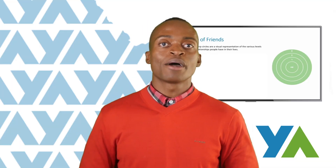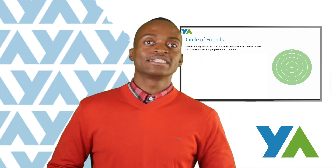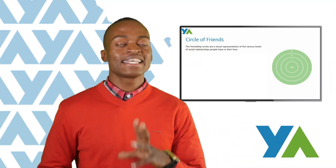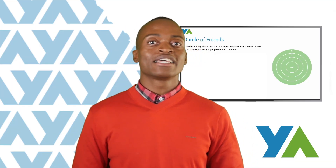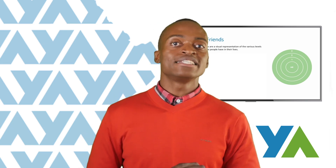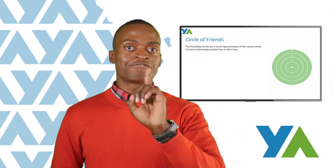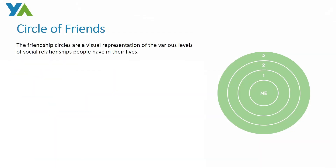And now we are moving on to the next aspect, which is the circle of friendship. This circle comprises of three layers: the first inner layer, the second outer layer, and the third outer layer.